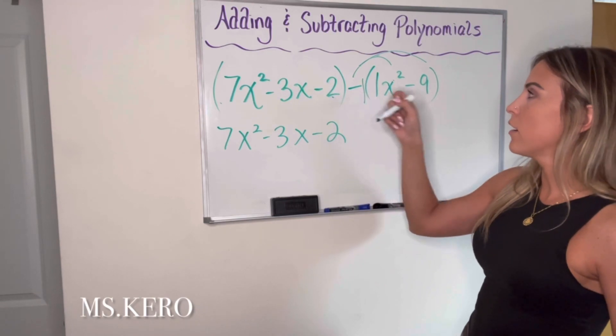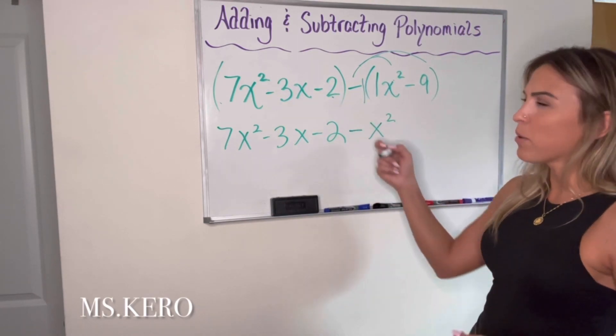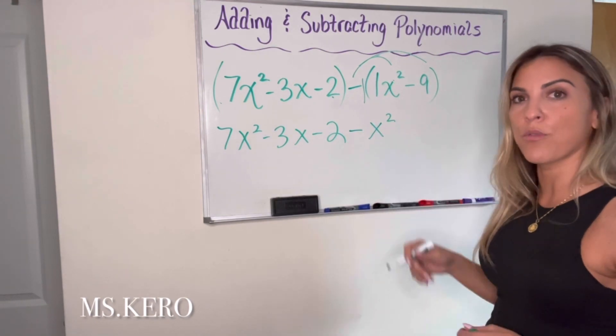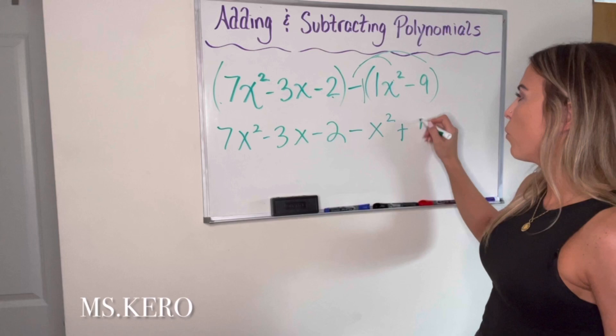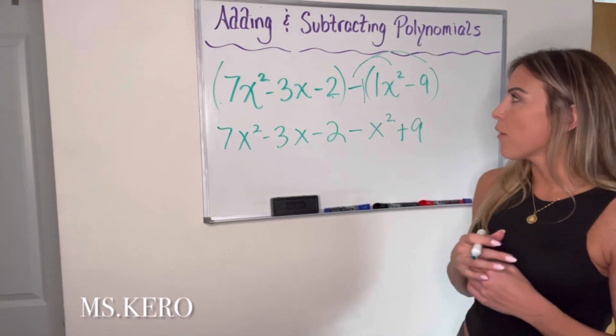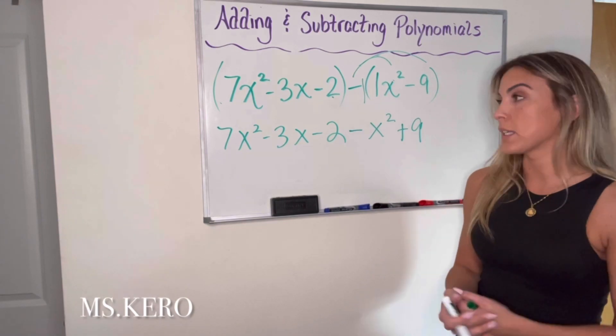So this is going to be negative 1 times 1x squared, which is minus x squared. You can put a 1 in front of here if you want, just simpler to write it without it. And then negative 1 times negative 9, which is a positive 9. So now that I've gotten rid of the parentheses, I can start looking for those like terms again.